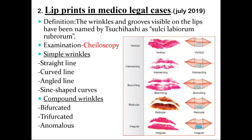Cheiloscopy is the examination of lip prints — the wrinkles visible on the lips. It is classified into simple wrinkles and compound wrinkles. Simple wrinkles include straight line, curved line, angled line, and sine-shaped curves. Compound wrinkles include bifurcated, trifurcated, and anomalous.